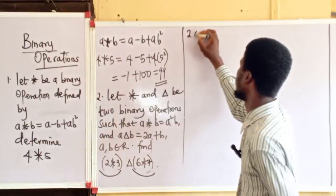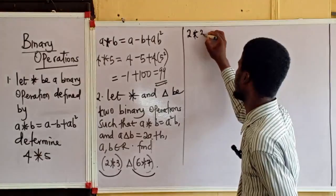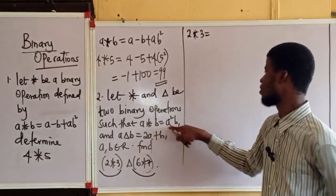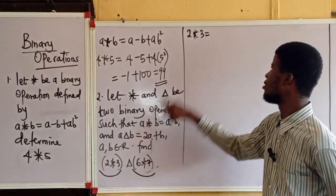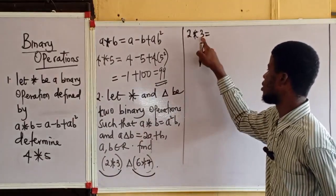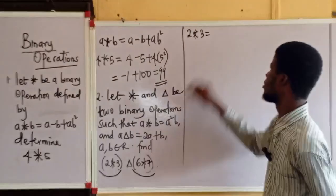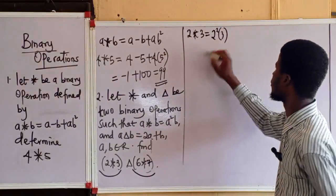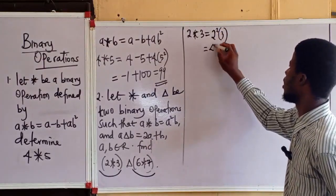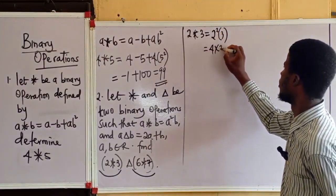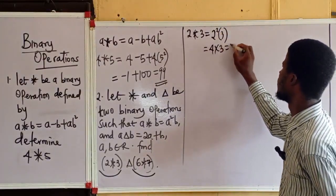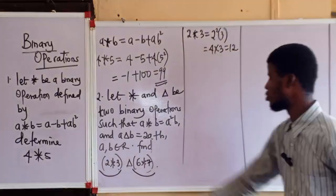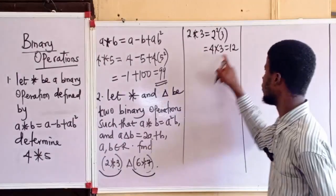If I am saying 2 operation 3, based on this rule of combination, a is 2 and b is 3. So I am going to write 2 squared times 3. 2 squared is 4, and 4 times 3 gives 12. So 2 operation 3 is 12.